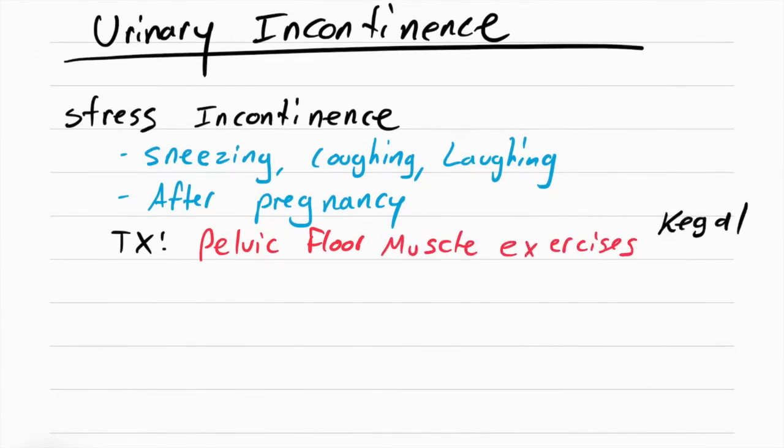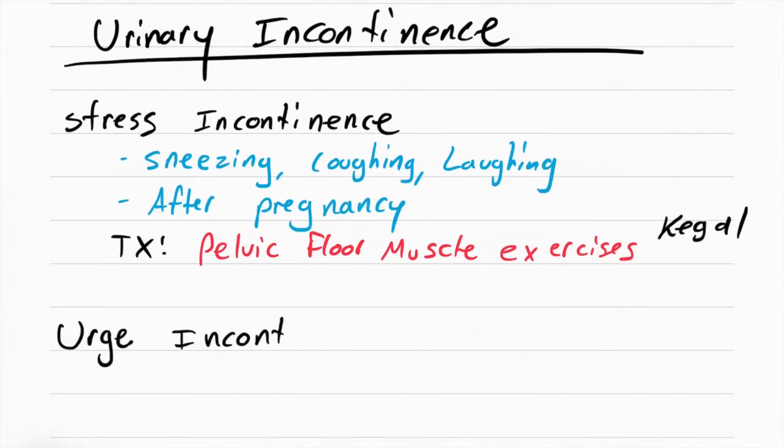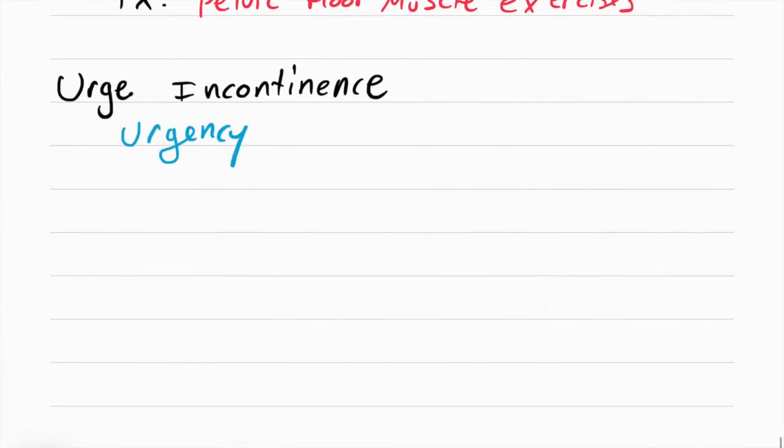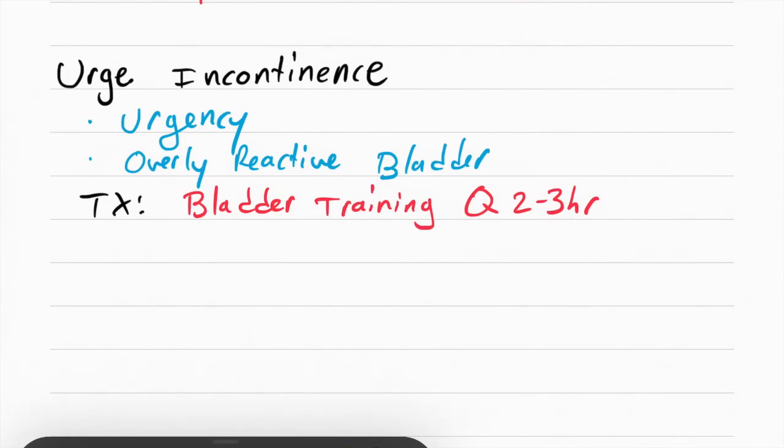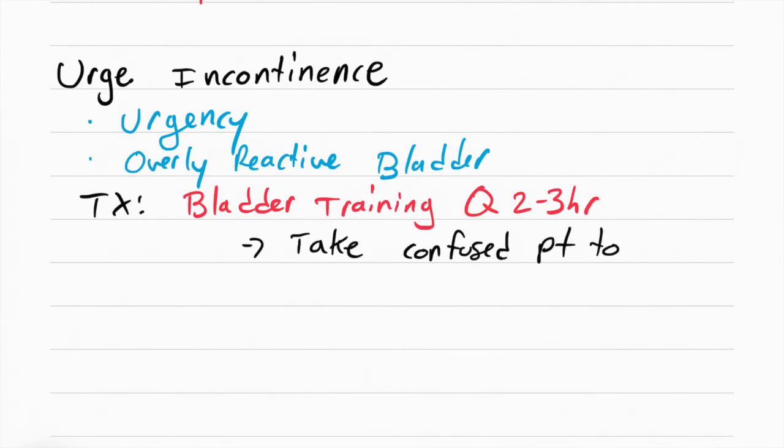The next type of incontinence is called urge incontinence, and this is when all of a sudden the patient feels an urge to pee. This is because of an overactive bladder that's caused by many diseases. What you want to do for this patient is do bladder training, meaning have them go pee every two to three hours on a schedule. Tell them to hold it until the three hours are up, then they can go pee. Make sure you take the confused patient to the bathroom. It's not enough to tell the patient to go pee in three hours because they're going to forget. You can also give an antispasmodic like oxybutynin to stop spasms of the bladder that's causing the incontinence.